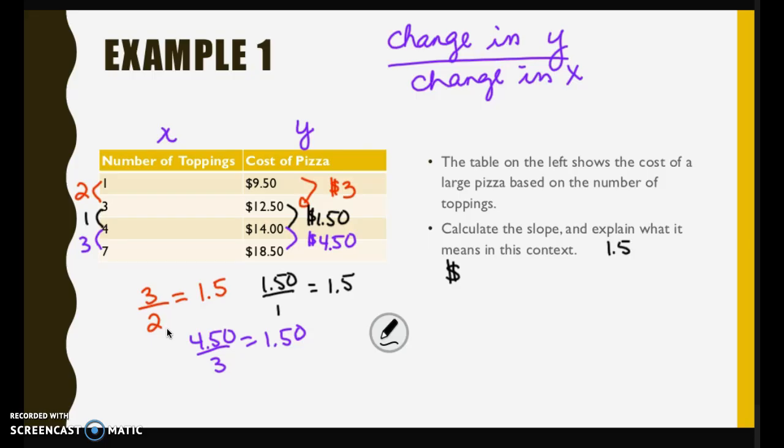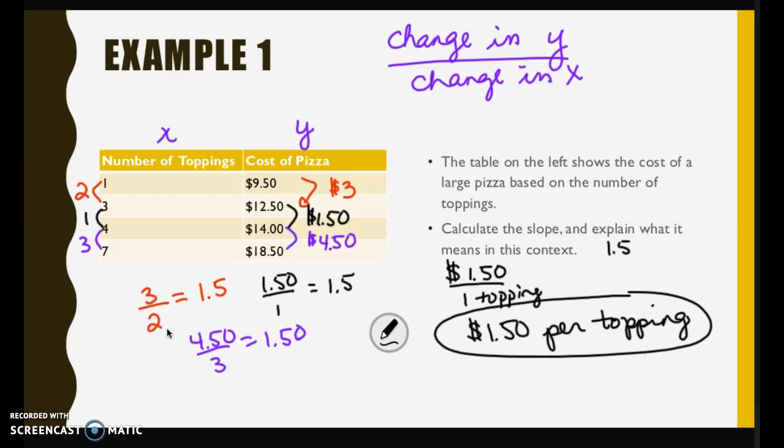I want to really think about what that means in this context. So it's a rate, it's a rate of change. I'm going up $1.50 for every one topping. That means that the pizza toppings must cost $1.50 per topping. If you're explaining slope in the real world, probably 99% of the time, you're going to use the word per as you describe it.